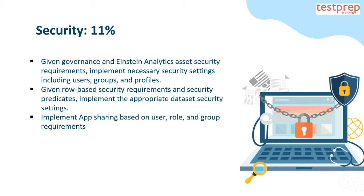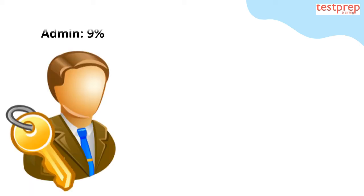Security (11%): given governance and Einstein Analytics asset security requirements, implement necessary security settings including users, groups, and profiles. Given row-based security requirements and security predicates, implement the appropriate data set security settings. Also, implement app sharing based on user role and group requirements.